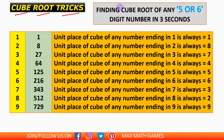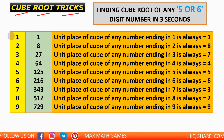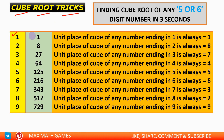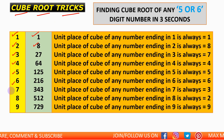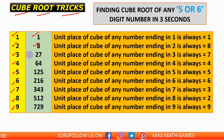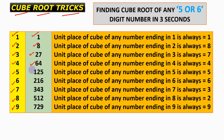The cube of 1 is 1, the cube of 2 is 8, and similarly the cubes of 3, 4, 5, 6, 7, 8, and 9 are respectively 27, 64, 125, 216, 343, 512, and 729.